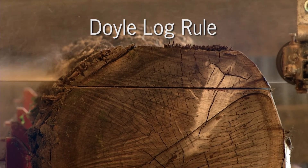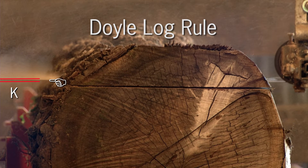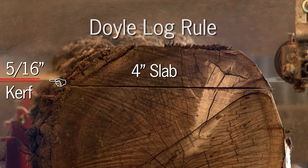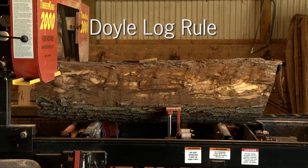Log rules are approximations of the amount of wood in a log — none provide the exact amount that will be cut. The Doyle log rule was proposed in 1825 and is still widely used in the eastern and southern United States for hardwood logs. Doyle is also commonly used in Iowa and Nebraska for hardwood logs, especially for high-value walnut logs. The Doyle rule assumes a saw kerf of five-sixteenths inch.